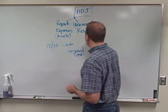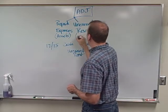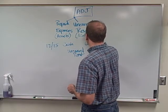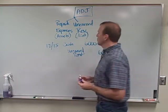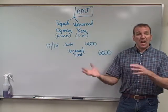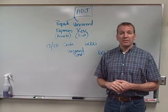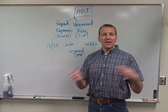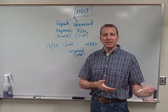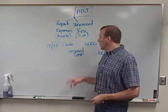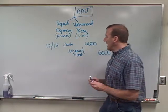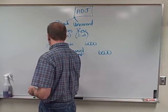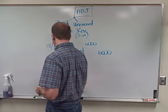Prepaid expenses are assets; unearned revenues are liabilities. They're kind of opposite of each other — if one company has a prepaid, the other one has the unearned. So now what's going to happen on December 31st? I think this is pretty straightforward.